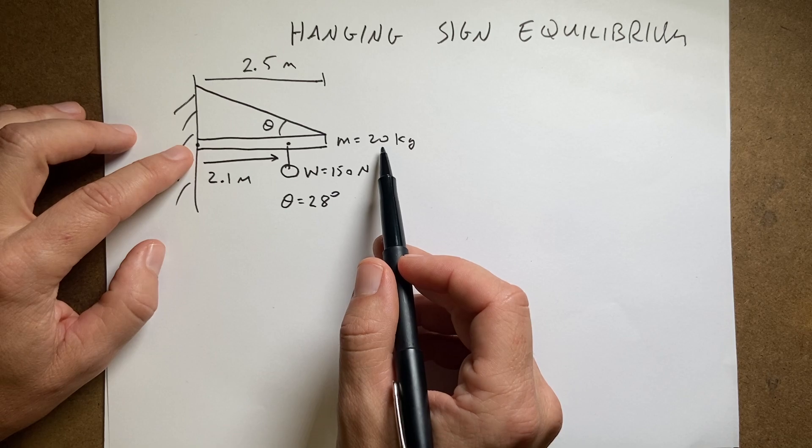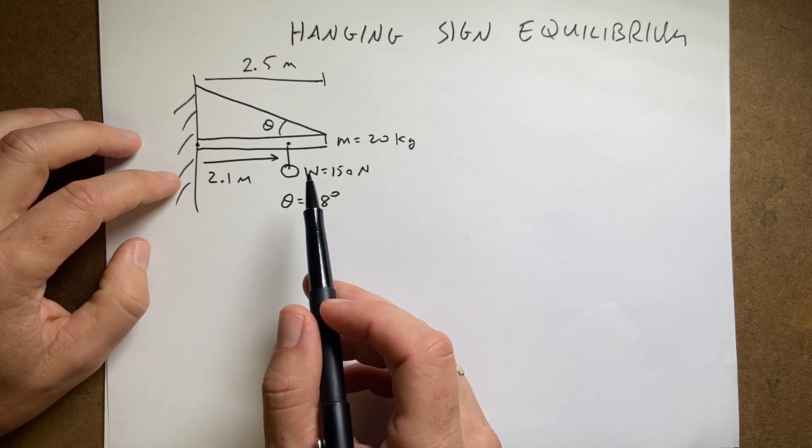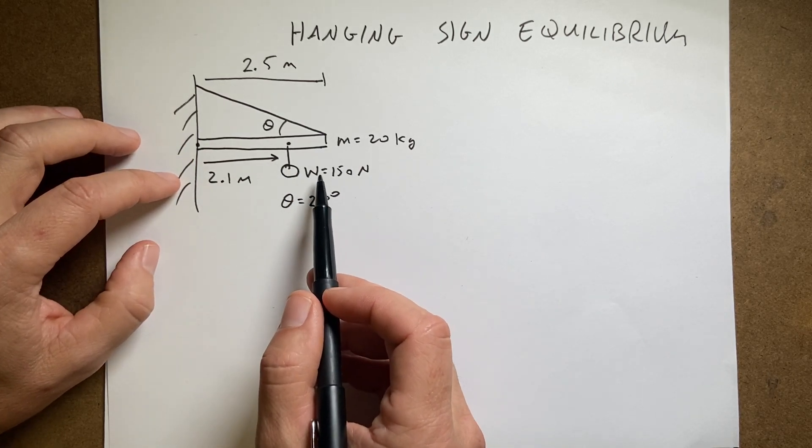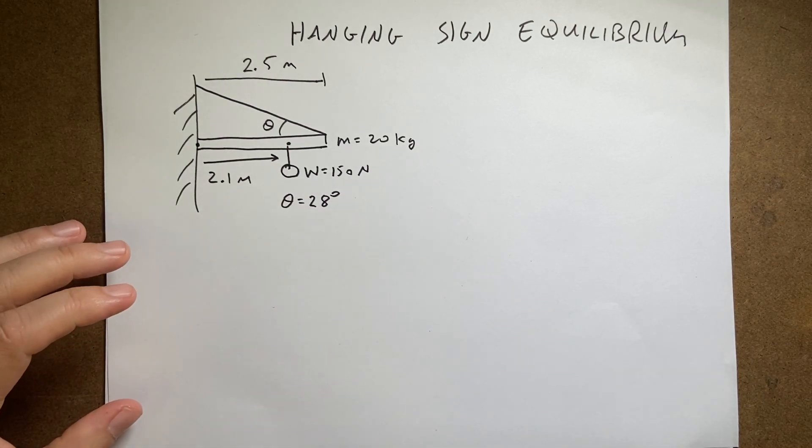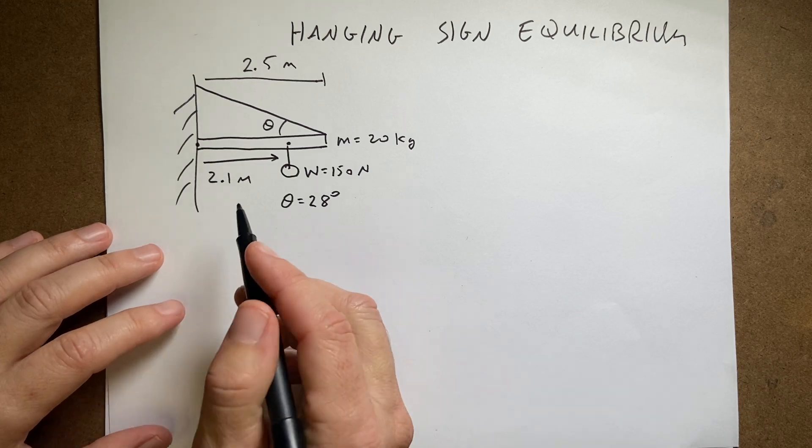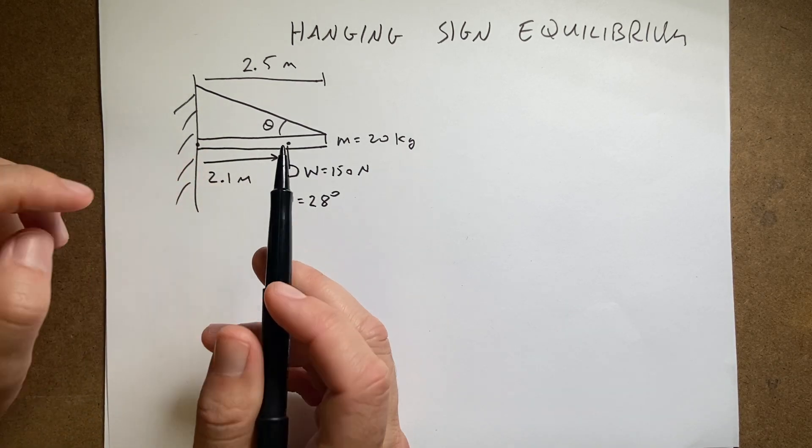So my beam is 2.5 meters long. It has a mass of 20 kilograms, which is kind of heavy, but okay. And then this is my weight hanging down, it exerts a force of 150 newtons. And now there's a little bit of short tricks here, and so this is 2.1 meters away.